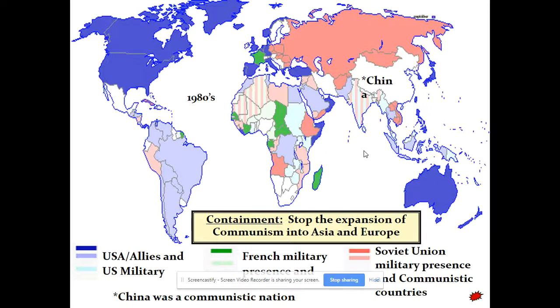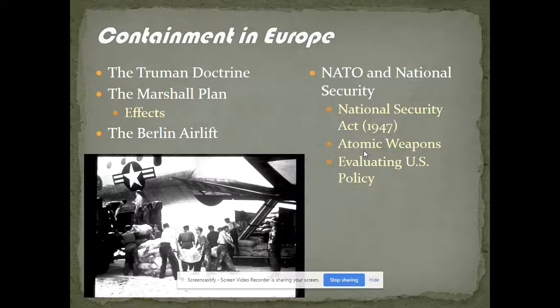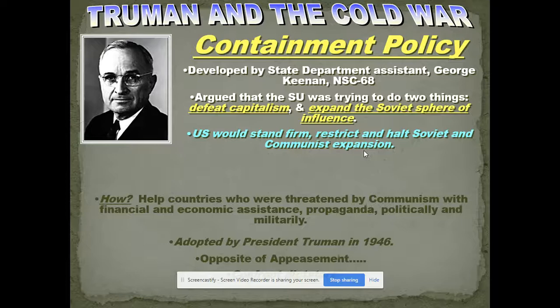Eisenhower is a little more aggressive; Kennedy wanted to be a little more aggressive; Johnson, not quite as much except for Vietnam; Nixon is going to be less confrontational; Reagan is going to try to confront communism a little more head-on in the 1980s. You've got to know what containment is. Truman's key policies are the Truman Doctrine, the Marshall Plan, the Berlin Airlift, and NATO — this is an important slide you may want to print off or definitely take notes on.